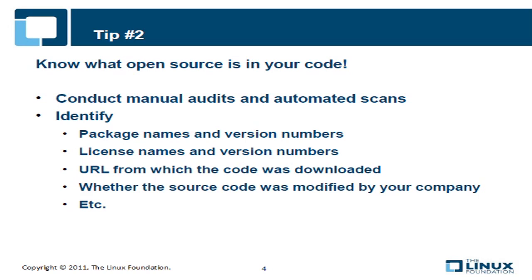What can you do? You can conduct manual audits and automated scans to uncover the open source content. Although they may be incomplete and imperfect, manual audits can be a useful starting point. Identify team leaders for each product subsystem and component and ask them to go through their source code looking for open source. Most of the open source will be identifiable by header comments that include copyright and license notices.